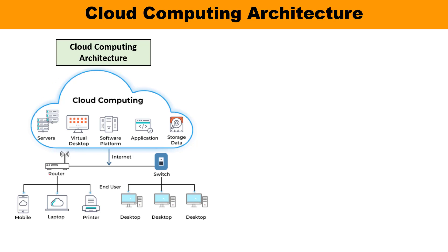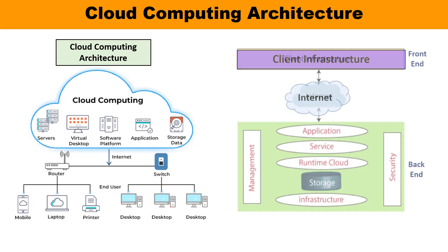Here you can observe this is the Cloud Computing Architecture — this is the Cloud. You can observe there are some servers, some virtual machines, platforms, software platforms, applications, and data storage. And with the help of internet connections, end users can communicate and interact with the cloud. You can see there are end users as well. Now let us draw and discuss in detail about the architecture.